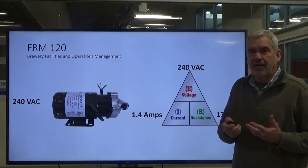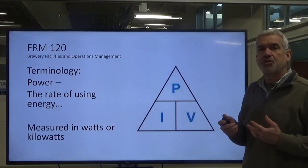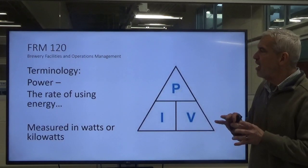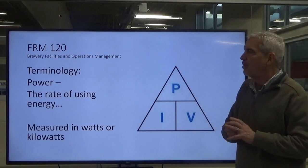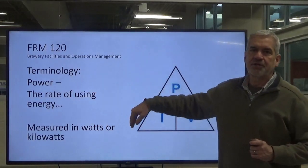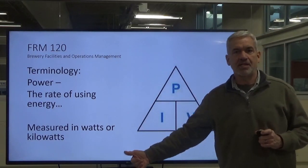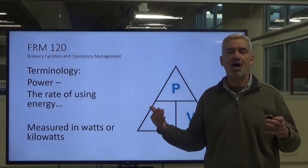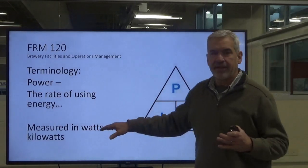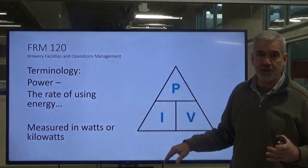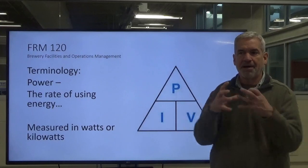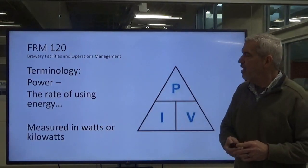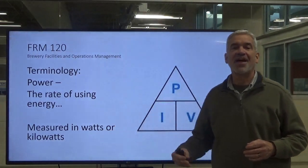So that's how we mathematically calculate things. Now let's get into power — it's one more term we need to get our heads around, and that should be it for terminology. Power is the rating of the energy that we use — how many watts something is. Prime example: a hairdryer is 1,500 watts of power. That's a measure of how much power the hairdryer uses when the fan is running and the heating element is heating up. We also measure it in kilowatts, which is thousands of watts.